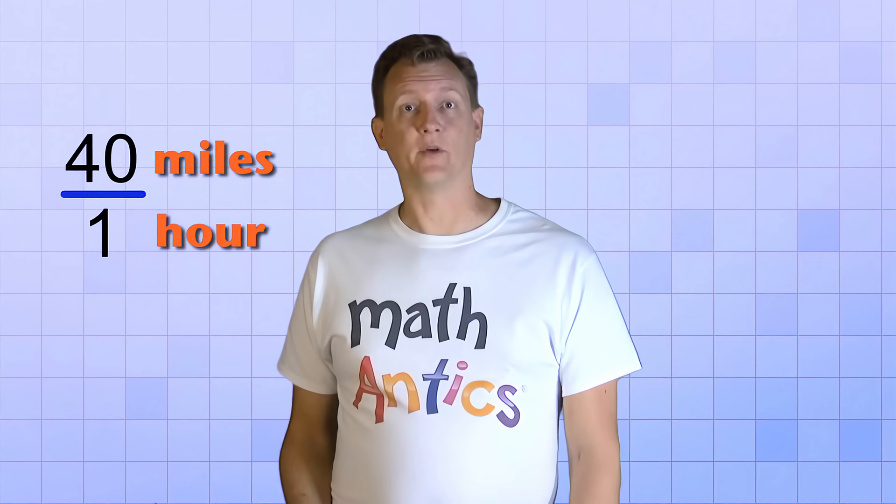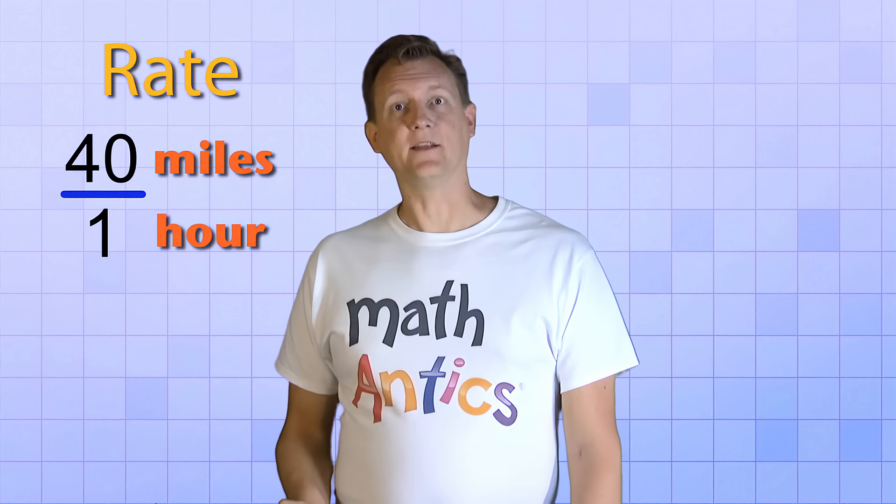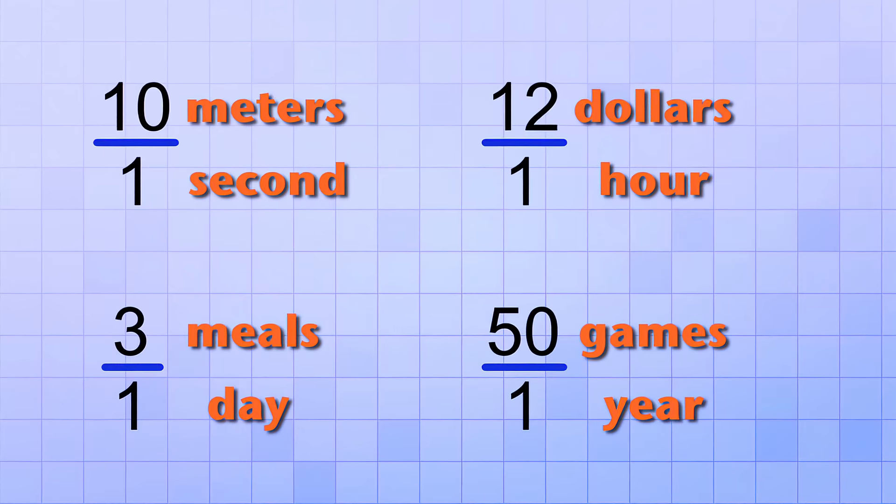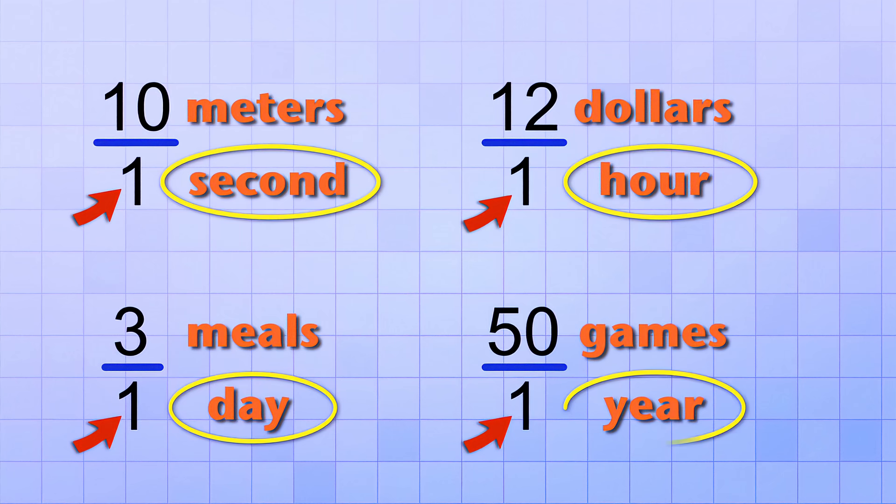40 miles per 1 hour is a type of ratio that we call a rate. A rate is just a ratio that usually involves a period of time. Here are some common examples of rates: 10 meters per second, 12 dollars per hour, 3 meals per day, 50 games per year. Notice that the bottom numbers in each of these ratios relate to a period of time: seconds, hours, days, years. And that's why we call them a rate.